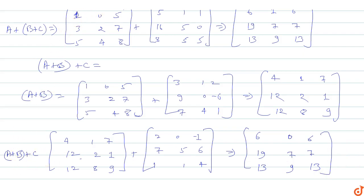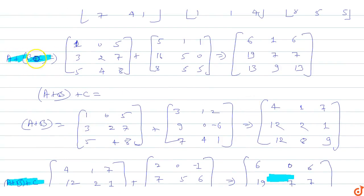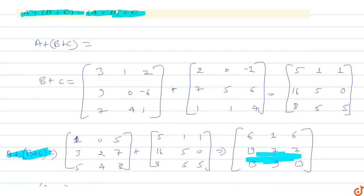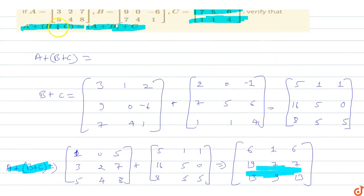Now we can see that (A + B) + C matrix equals A + (B + C) matrix. Both matrices are equal, so we can say that matrix addition is associative — A + (B + C) and (A + B) + C are both equal. Therefore LHS equals RHS, and we have verified the associative property.